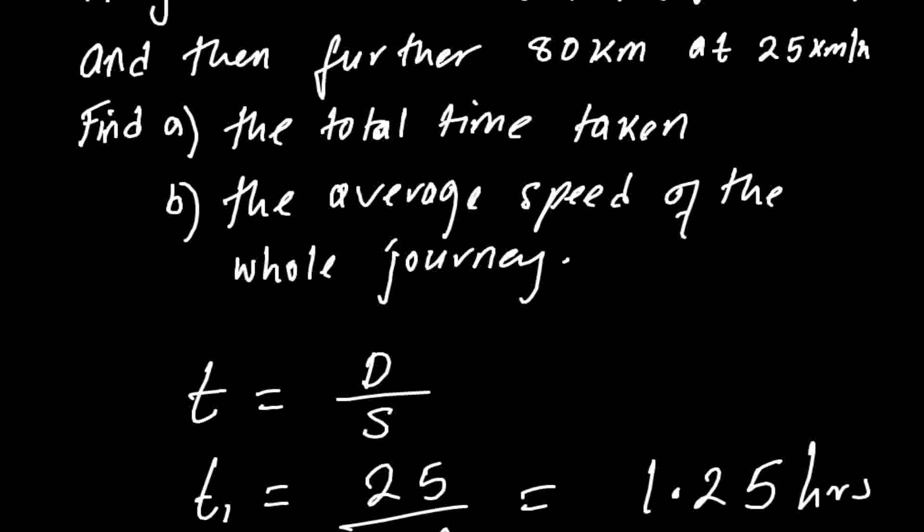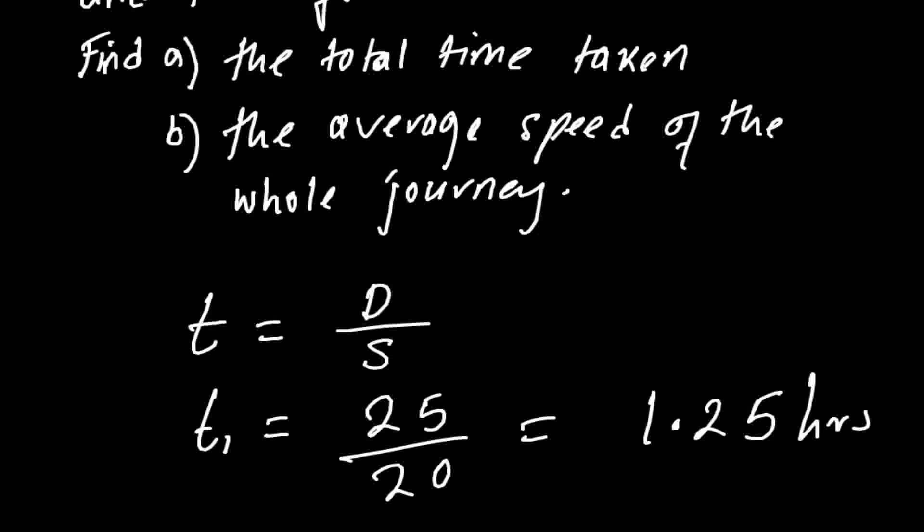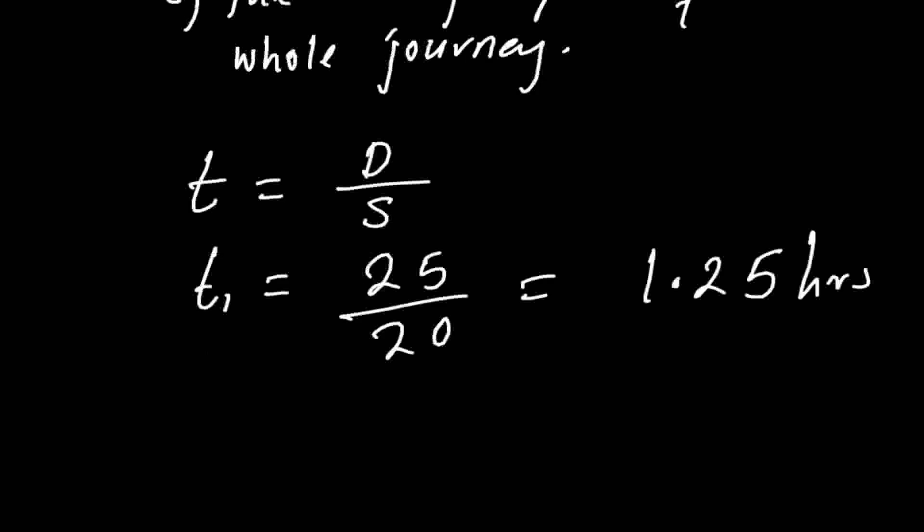Then for the second part of the journey, the cyclist traveled 80 kilometers at 25 kilometers per hour, so I'm going to call that t2. So t2 equals to 80 divided by 25, which is 3.2 hours.